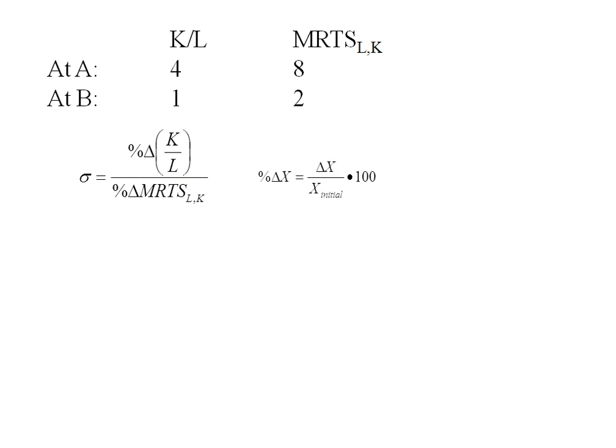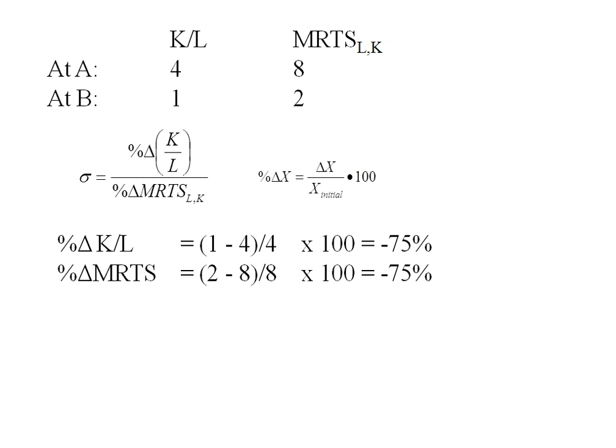As a refresher, the percent change in any variable will be the change in that variable over the initial amount times 100. For the percent change in the capital-labor ratio, that's 1 minus 4, divided by 4, times 100, giving negative 75%. Doing the same for the marginal rate of technical substitution: 2 minus 8, over 8, times 100, is also negative 75%. When I plug this in, sigma equals negative 75% over negative 75%, which equals 1. So the elasticity of substitution is 1.